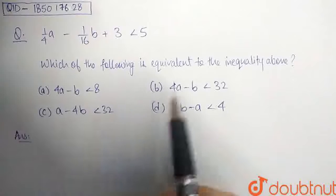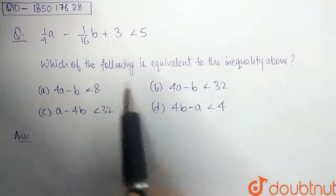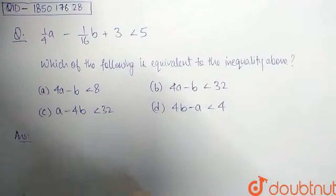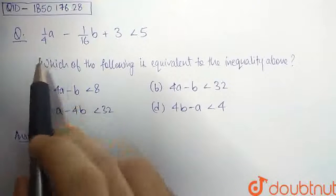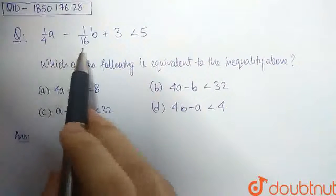Instead of checking with the options, we can directly simplify this inequality to get the form given in the options. First, we need to convert these fractions to integers.